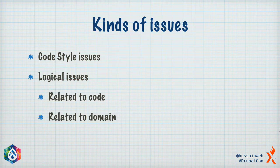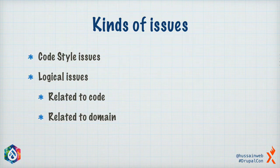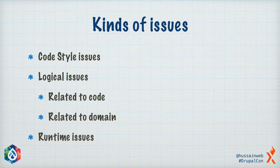Then there are logical issues with the code — some directly associated with the code, like the examples we just saw, and some having to do with the business logic of what your code is doing. And finally, we have runtime issues — things like your database server going away, or the API you rely on going away. So very broadly, for purposes of our discussion today, let's say these are the kinds of issues.